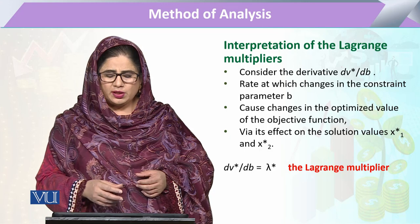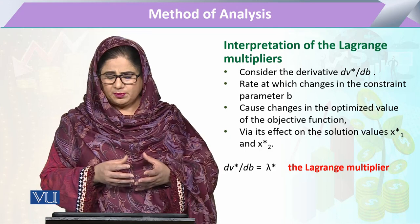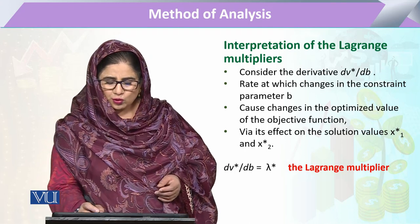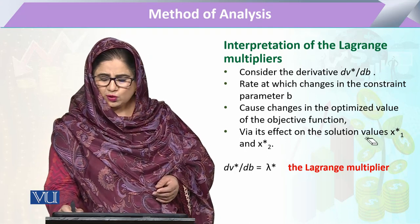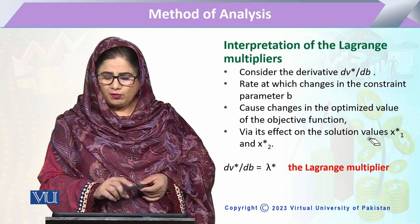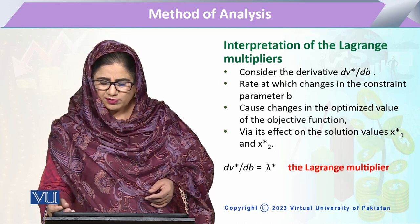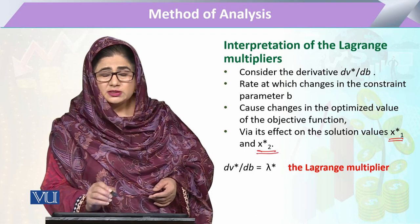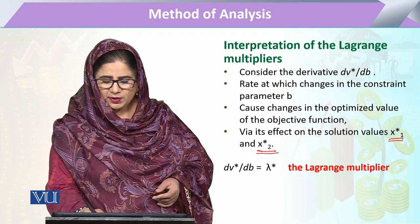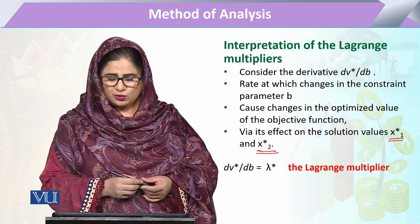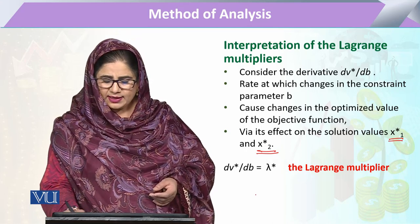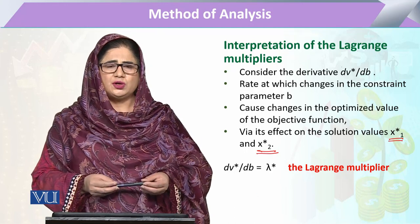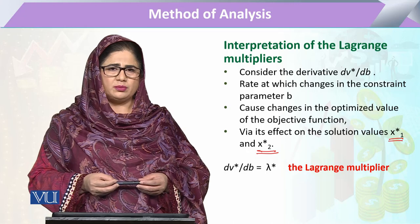According to Lagrange multiplier theory, we can calculate the effect of the Lagrange on the solution — giving us optimized values of x1 and x2. So this Lagrange multiplier gives us the rate of change and the solution to our economic theoretical problems.